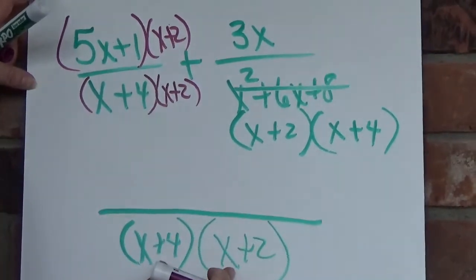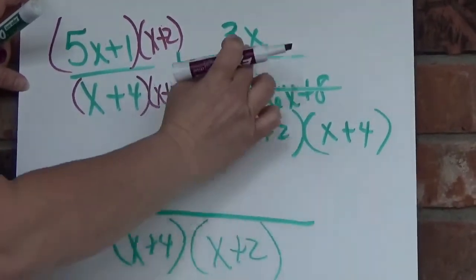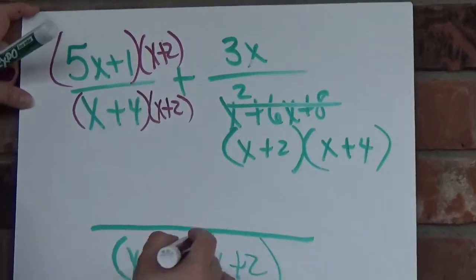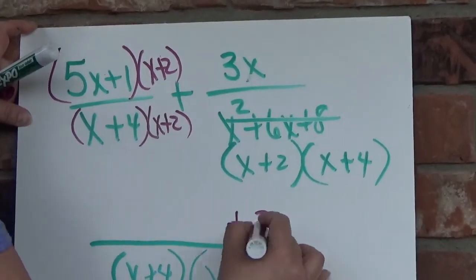Here, I have x plus 2 times x plus 4. It's the same, so I don't have to multiply that times anything. That's good. That means this is just going to be plus 3x there.